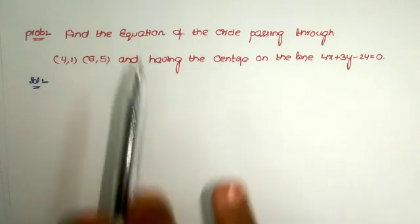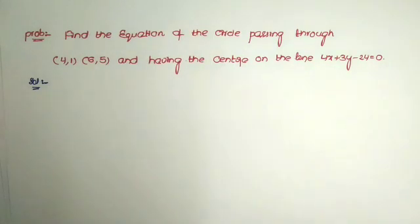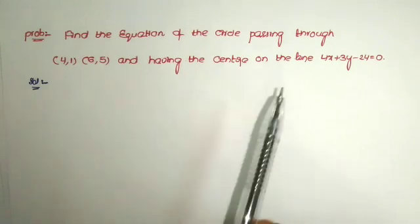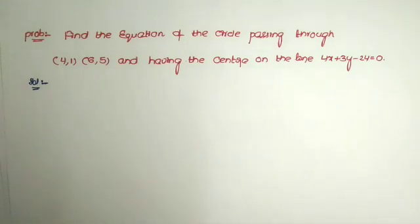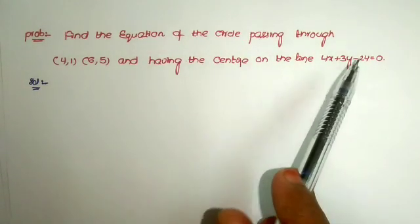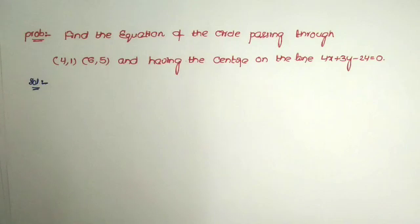To find the equation of the circle, we always take the equation in standard form. The standard form formula is x² + y² + 2gx + 2fy + c = 0. One more condition is given: the center lies on the given line. We replace the center in the line to form one equation, then using three equations we find all values and substitute them back into the formula.